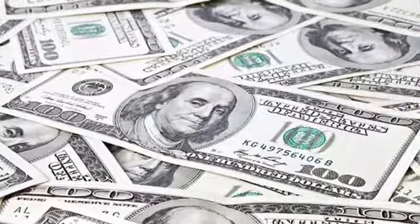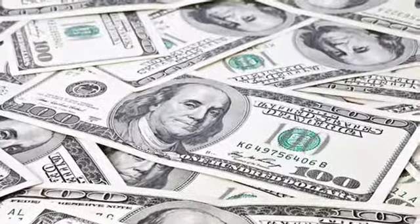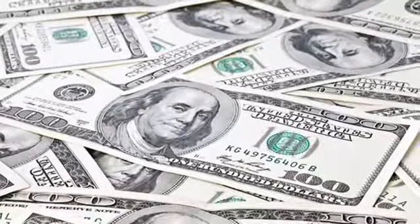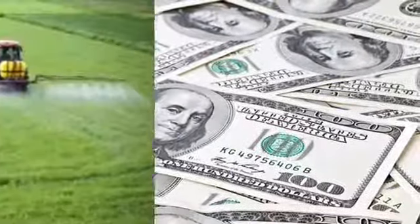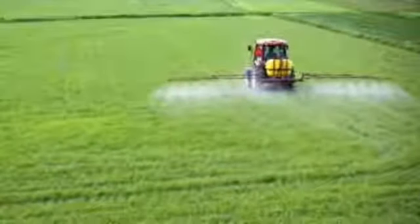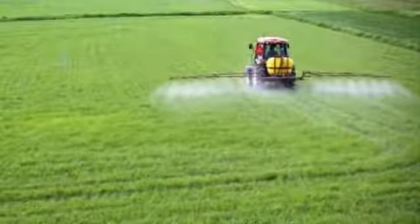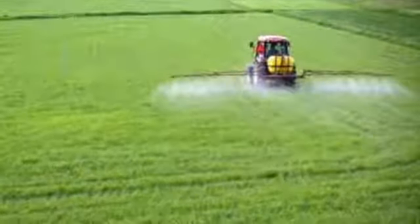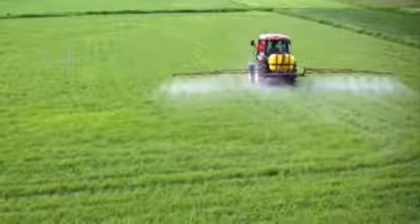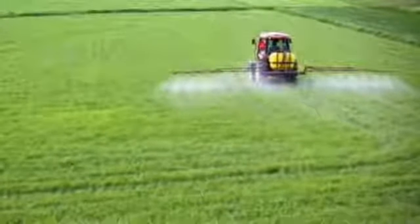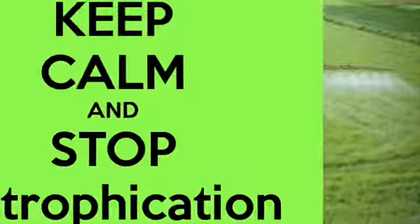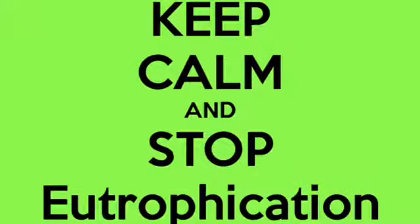Currently, companies around the world are monitoring the chemicals that they put in their products and fertilizers. One action step that we could use to help stop eutrophication would be to just be aware of the chemicals and fertilizers that we are using.